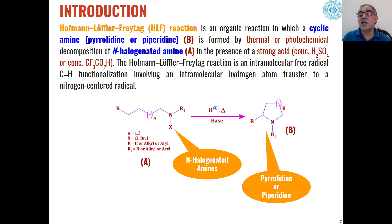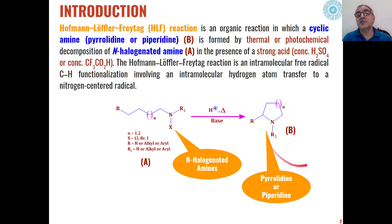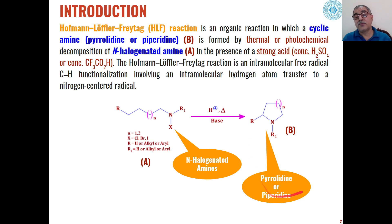If n is 1, then pyrrolidines are formed. When n is 2, piperidines — that is the 6-membered ring amines — are formed as the product. As far as the mechanism of this reaction is concerned, this is an intramolecular free radical functionalization reaction, leading to cyclization to give the Hoffmann-Löffler-Freytag reaction, using thermal or photochemical conditions.